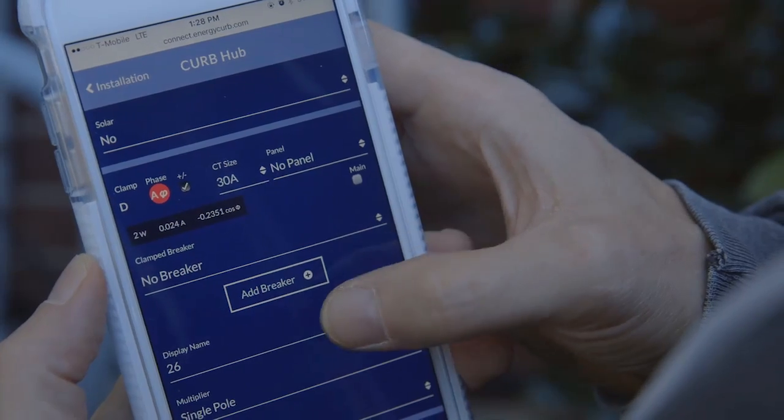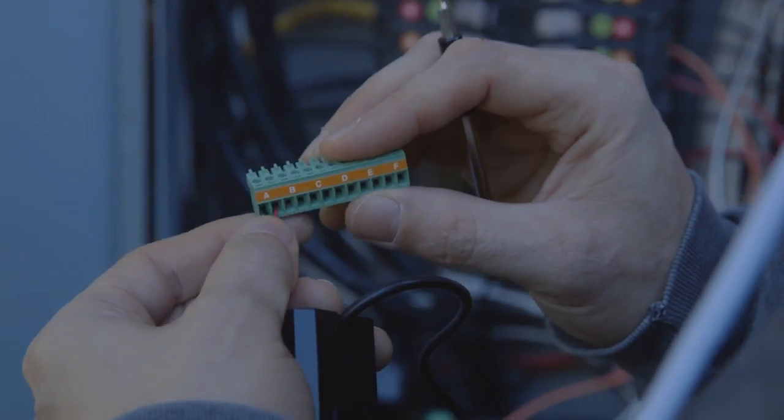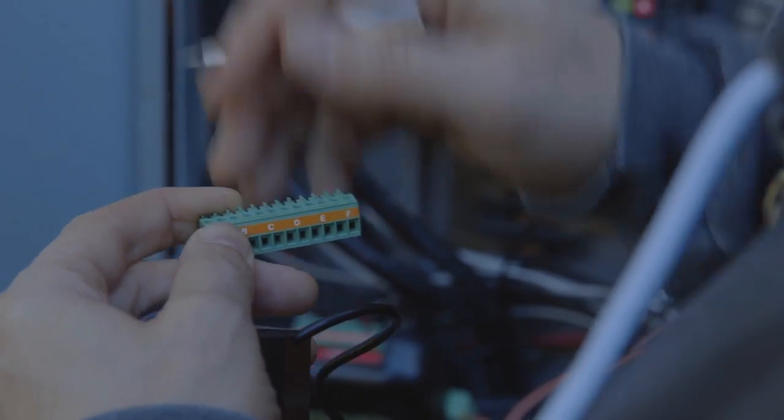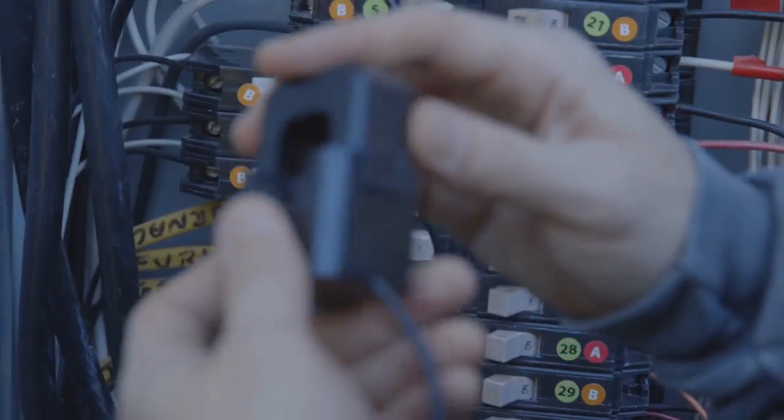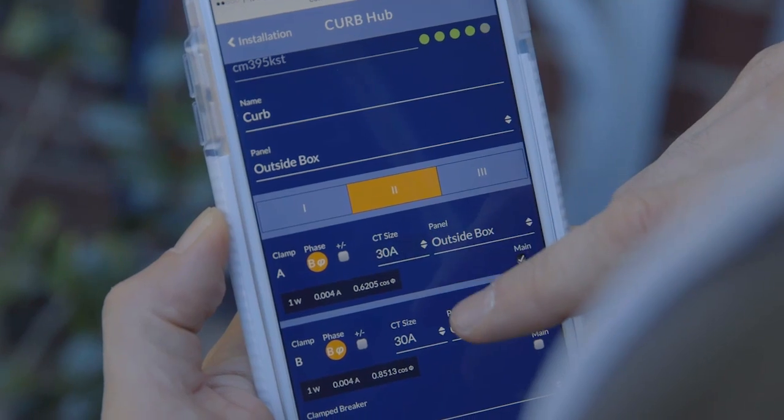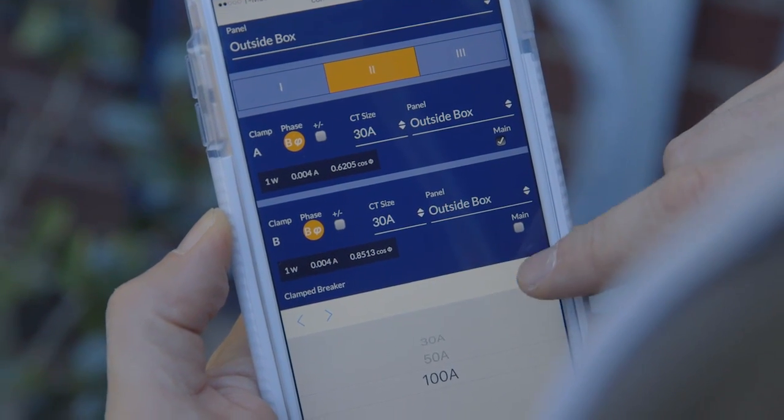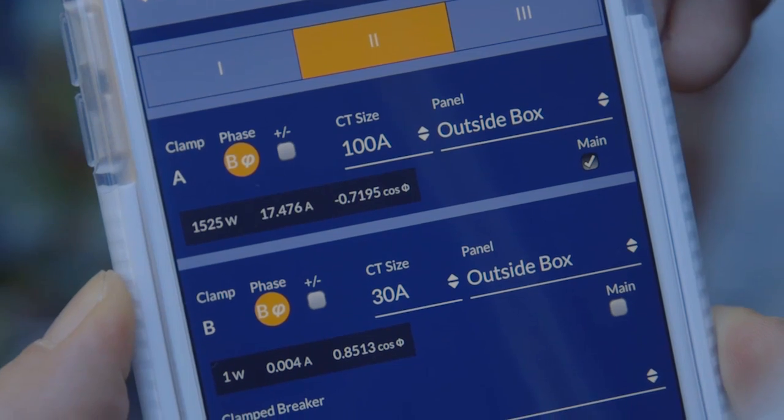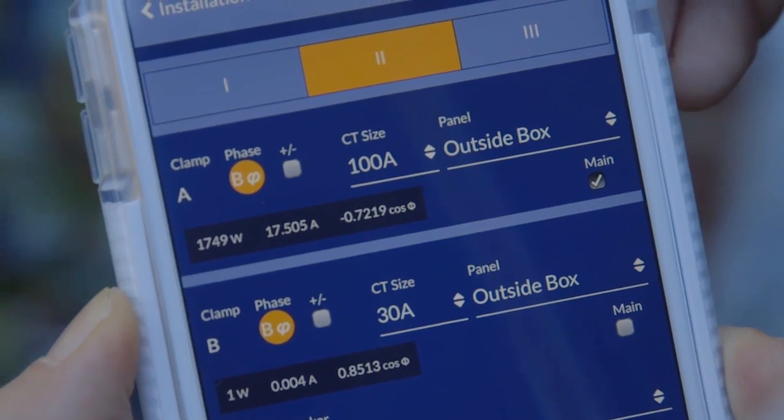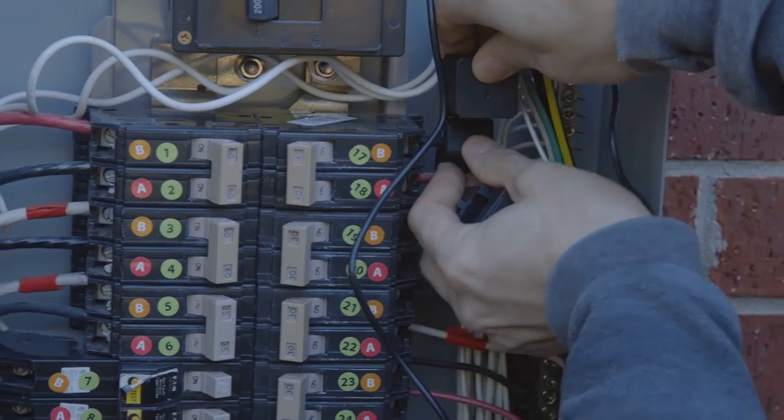Repeat these steps for wiring the B main and follow the instructions in the manual for wiring the remainder of the CT clamps. The breakers you labeled earlier will show up as selectable options for each new CT clamp you add to the web application. There's a handy guide to prioritizing appliances and circuits at the back.